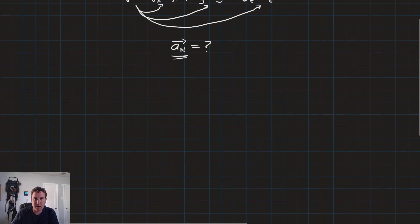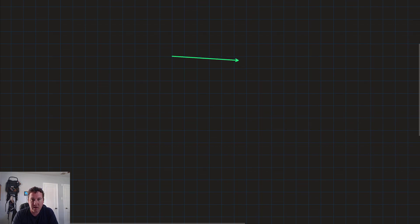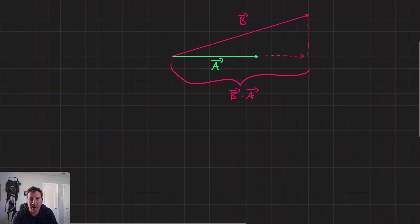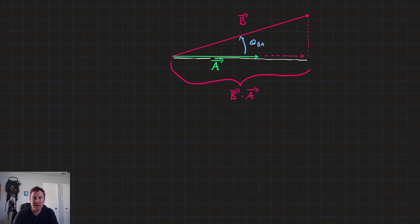Let's jump in. Imagine that we have two vectors — call the first one vector a and the next one vector b. The dot product basically says: what is the component of b in the direction of a? This entire component would be b dot a. We want to know the length of that component. We can also use the angle between them — the angle b of a — which helps us find the dot product as well.